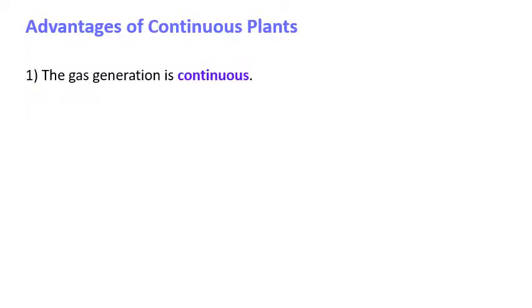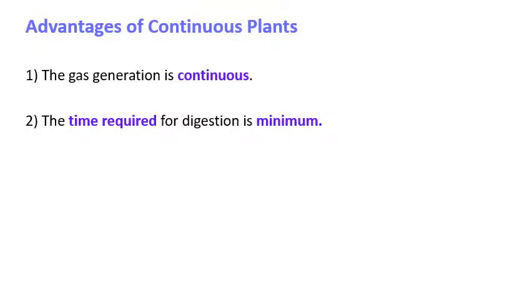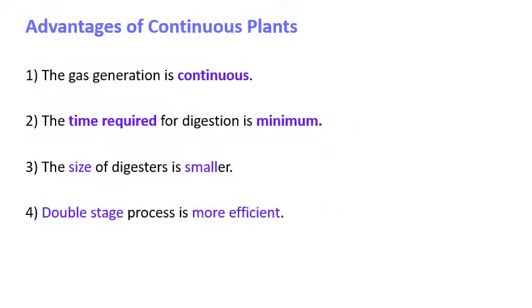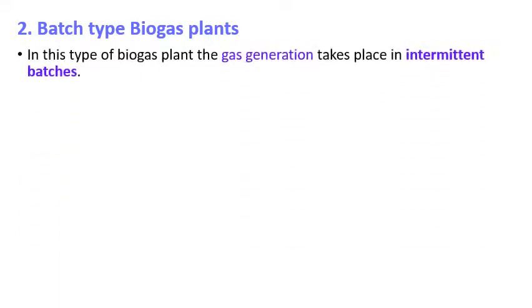The advantages of a continuous plant are: gas generation is continuous — though the flow rate may vary; the time required for digestion is minimum; and the size of the digester is smaller, meaning less floor area is occupied compared to having two stages. The overall process is more efficient.